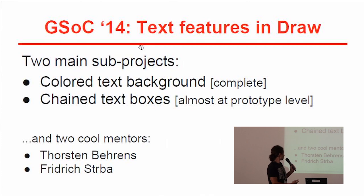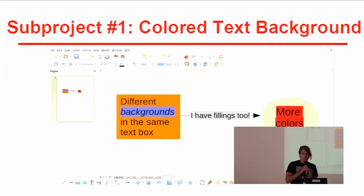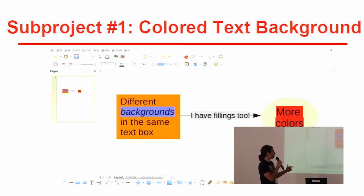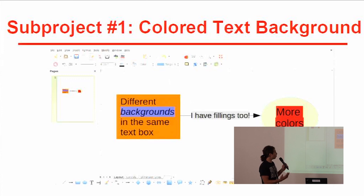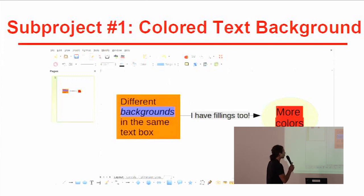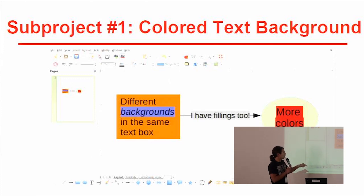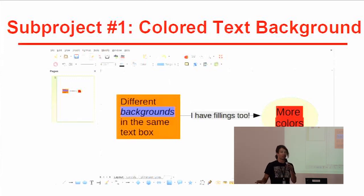I worked closely with Thurston Burns and was also mentored by Frederic. The first sub-project was about allowing text in Draw to have a background color on its own. Normally in Draw, any text will have the background that the shape it is in already has. With the changes we have now, we can have separate text with a separate background as a distinct feature.